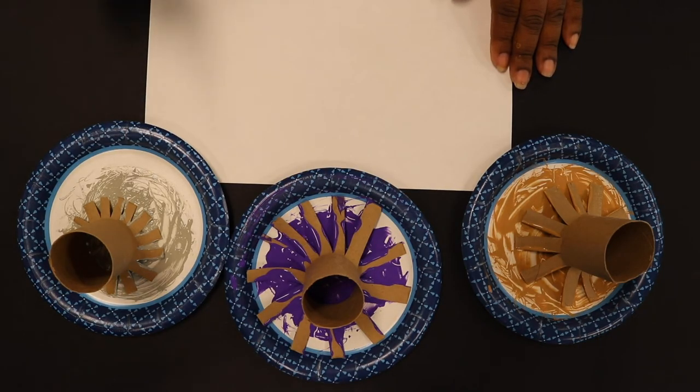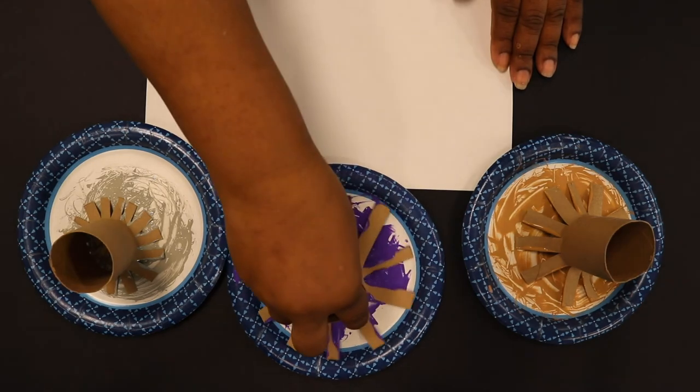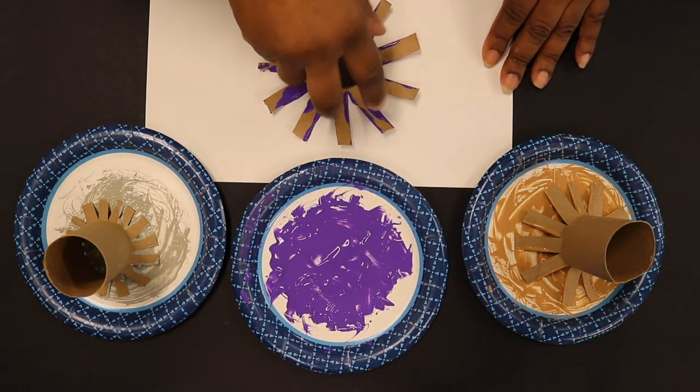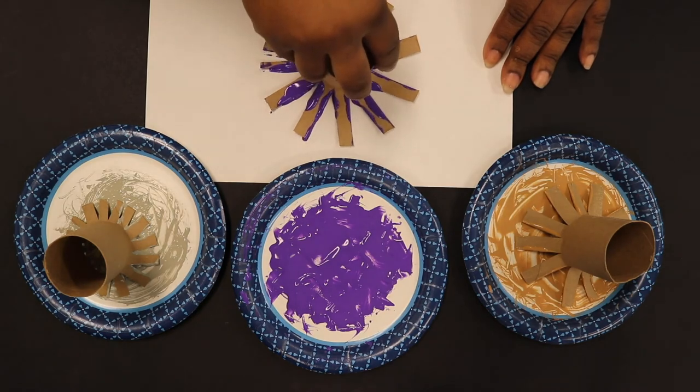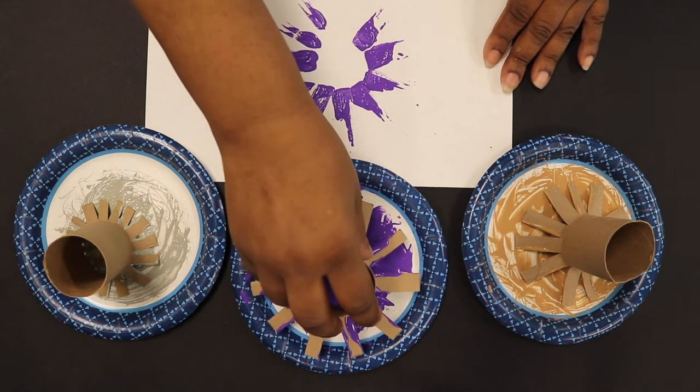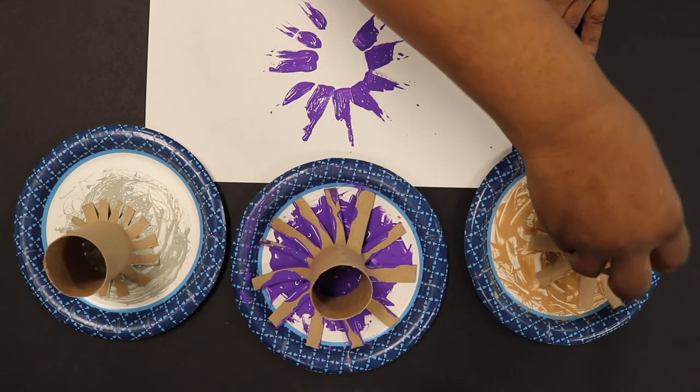Now we get to paint. I'm going to start with the long strips of paper first. There we go. Ooh, look at that. Isn't that pretty? Kind of looks like fireworks.